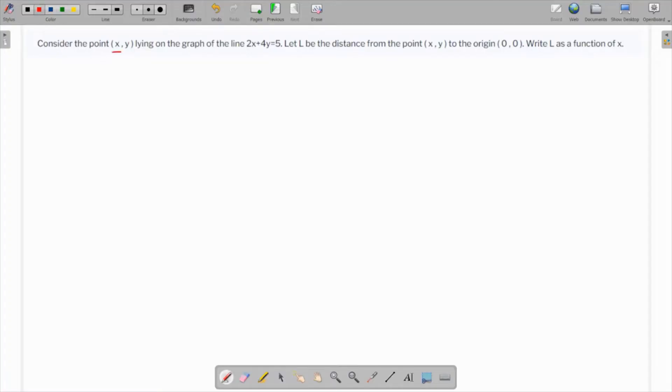We have to consider the point (x, y) lying on this particular graph and we have to find the distance L between (x, y) and the origin in terms of x. We know that the distance formula says that the distance is going to be...